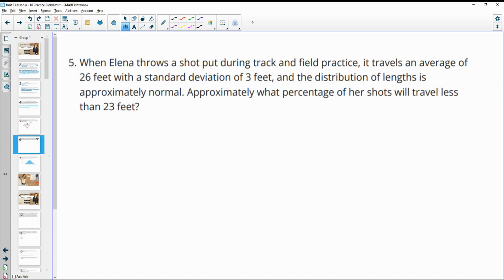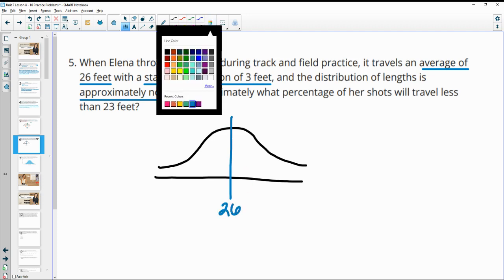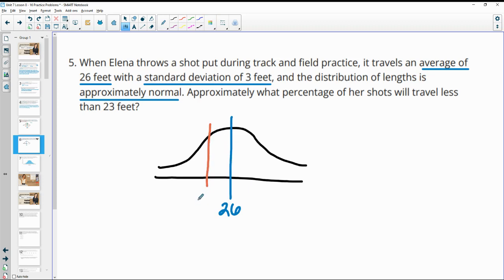Number five, when Elena throws a shot put during track and field practice, it travels an average of 26 feet with a standard deviation of 3 feet. The distribution of lengths is approximately normal. Approximately what percent of her shots are going to travel less than 23 feet. We've got this normal curve here with the mean being right in the middle, her average being 26 feet. And then a standard deviation of 3 feet. So we've got minus 3 feet would be at 23, plus 3 feet would be at 29. And this wants to know what percentage of her shots will travel less than 23 feet. So we're going to want this amount over here. So half of the data is going to be above the mean, half is going to be below the mean.